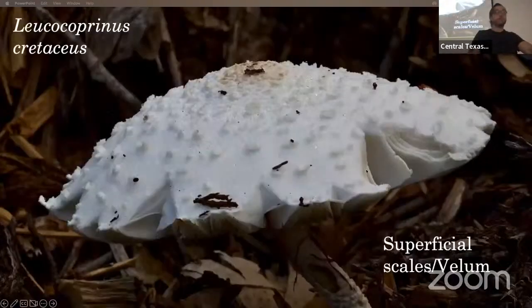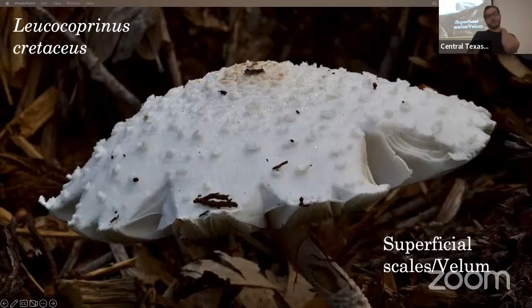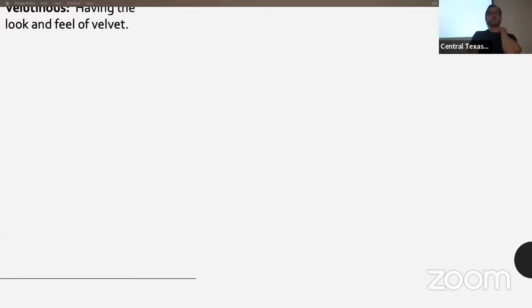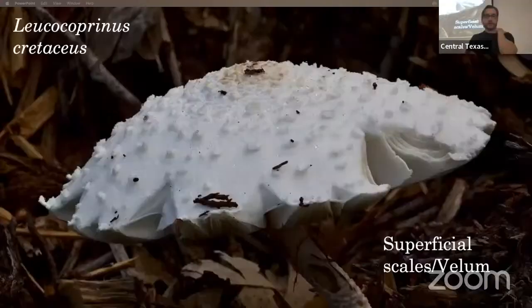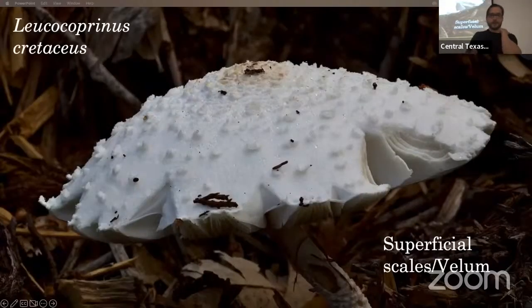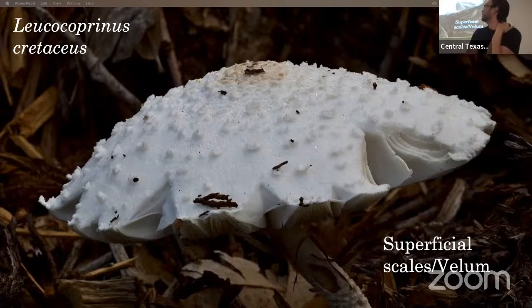Here's another one with some superficial scales and vellum — this is Leucocoprinus cretaceus. Those can be washed off very easily. These little features towards the center pick up a little bit of pigmentation — they're a little brown up there — but that can all be washed off with rain.